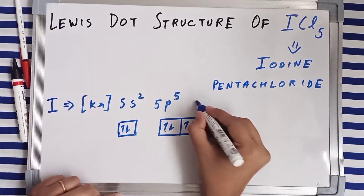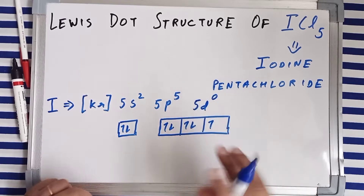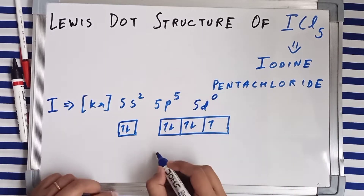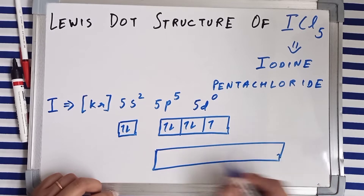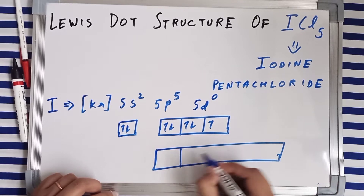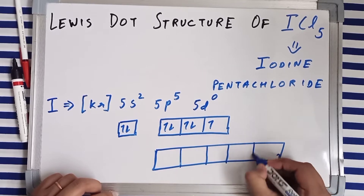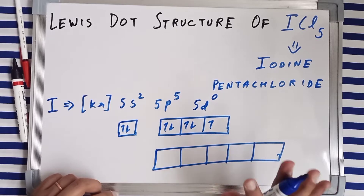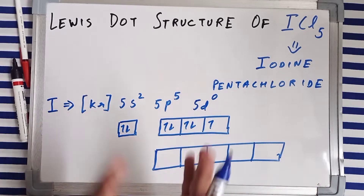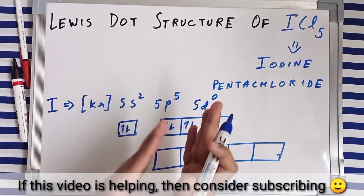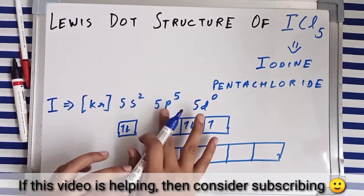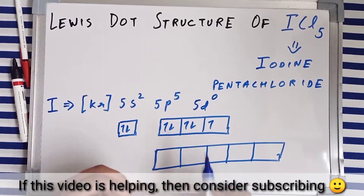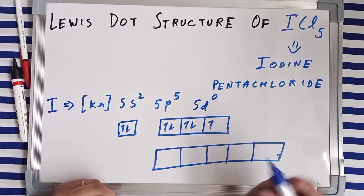Iodine currently has a vacant 5d⁰ subshell with no electrons. The d subshell has five orbitals — five boxes. What happens is that there is a shifting or jumping of electrons from the p subshell to the d subshell. These are the orbitals of the p subshell, and electrons can shift from there.